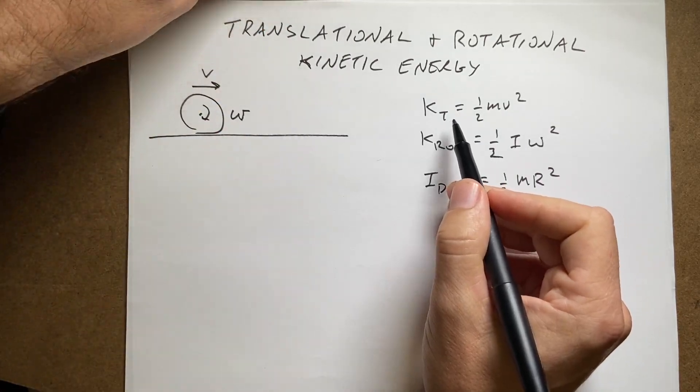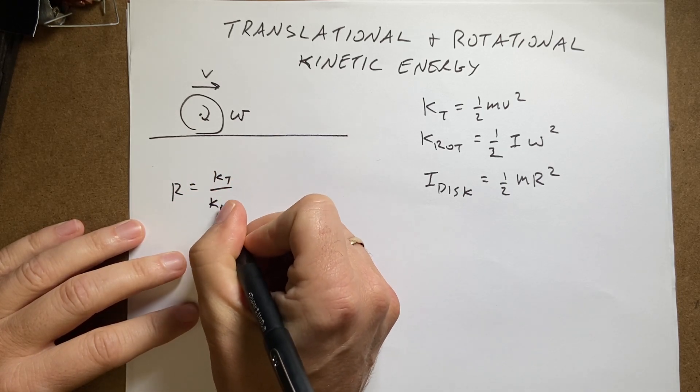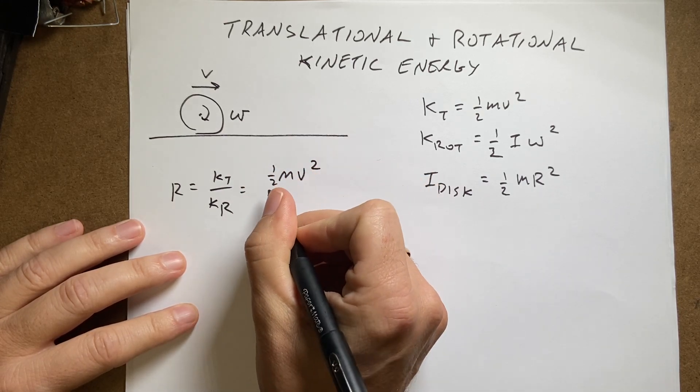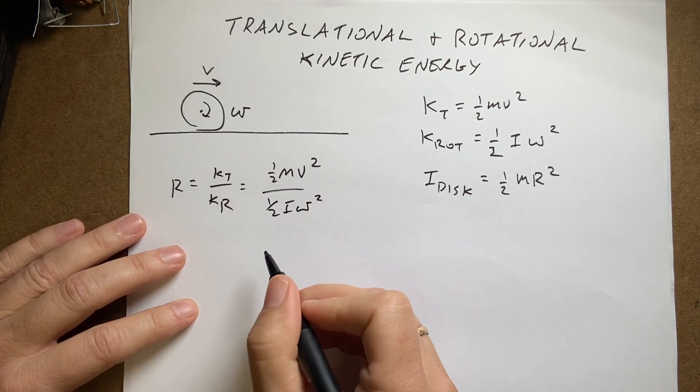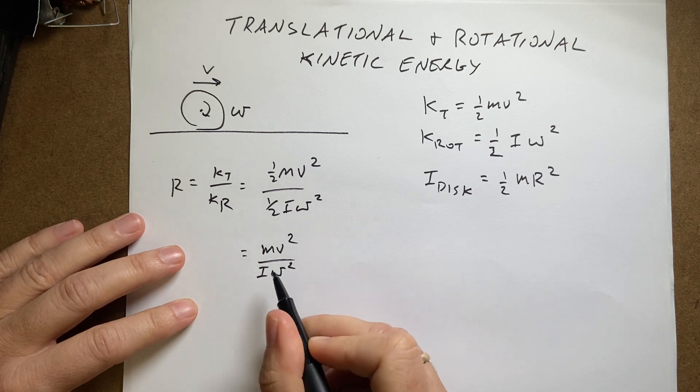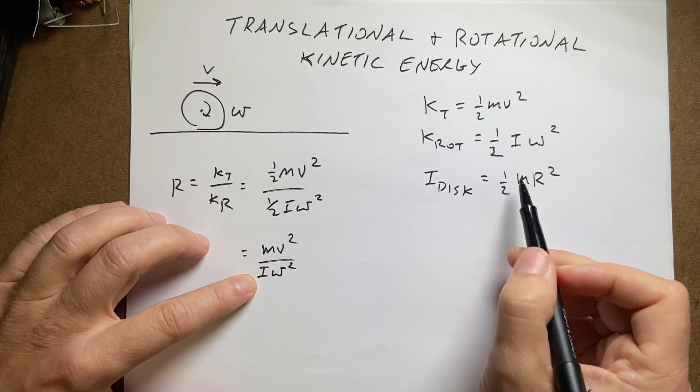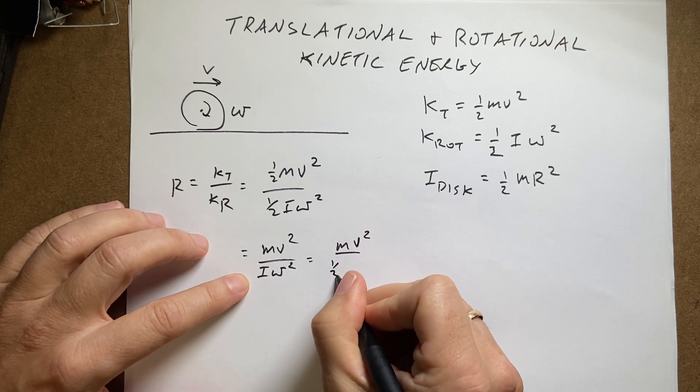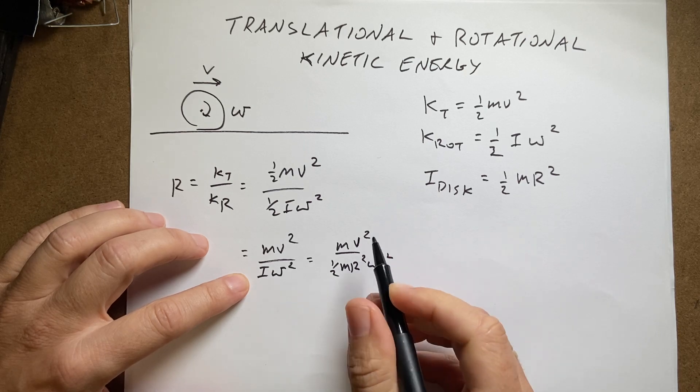So let's just calculate. I want to get the ratio. I'll call it r equals kt over kr. So it's going to be one half mv squared over one half i omega squared. So right away the halves cancel, the one halves cancel. So I'm going to say this is mv squared over i omega squared. Now I'm going to put in my value for i is one half mr squared. So I get mv squared over one half m r squared omega squared. Now the mass is cancelled.